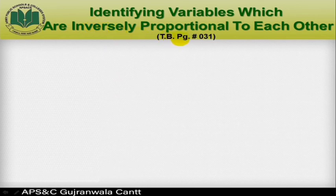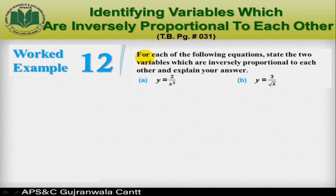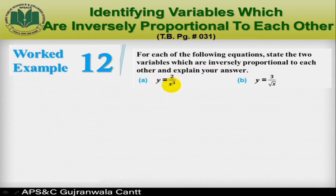Now open your textbook page 31. Let's try to identify variables which are inversely proportional to each other with the help of Worked Example 12. For each of the following equations, state the two variables which are inversely proportional to each other and explain your answer. Part (a): y = 2/x³, and part (b): y = 3/√x.